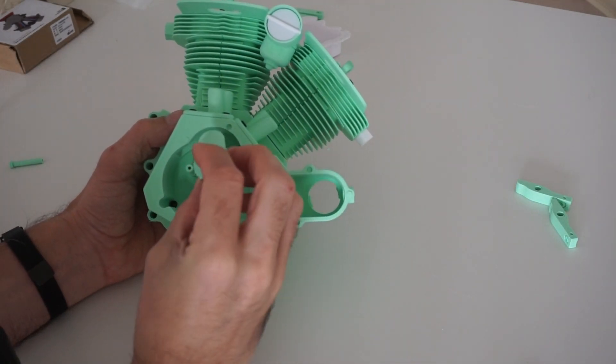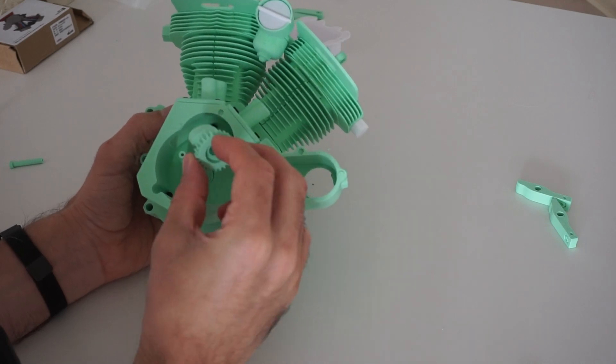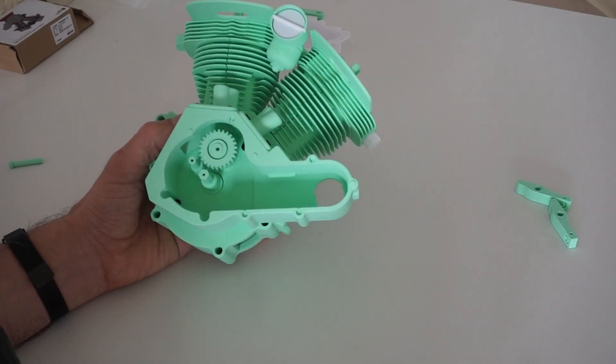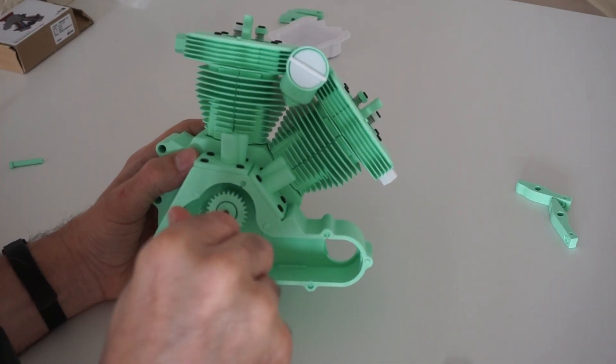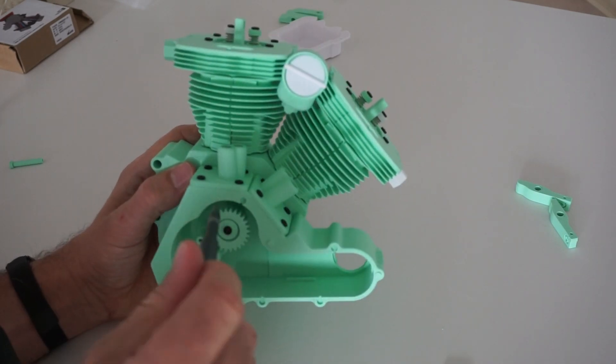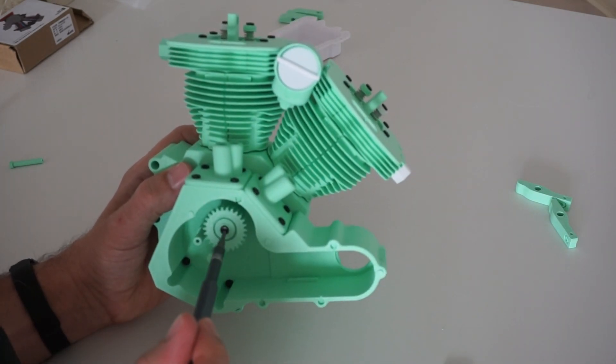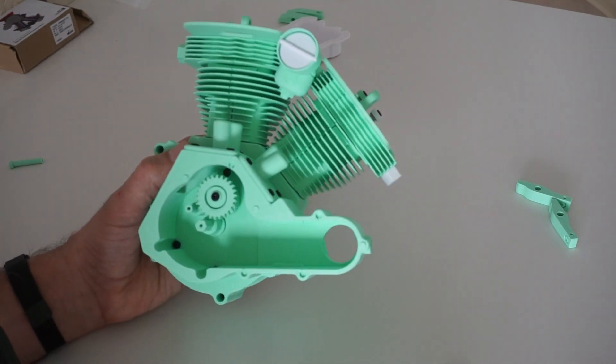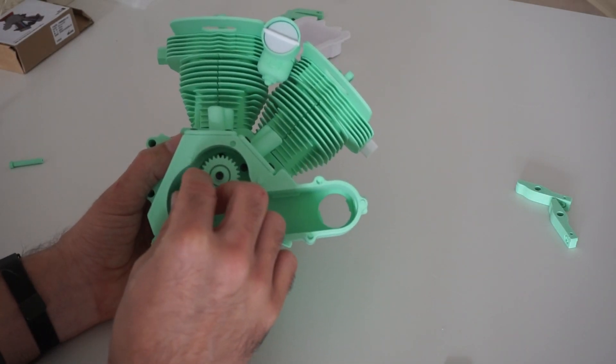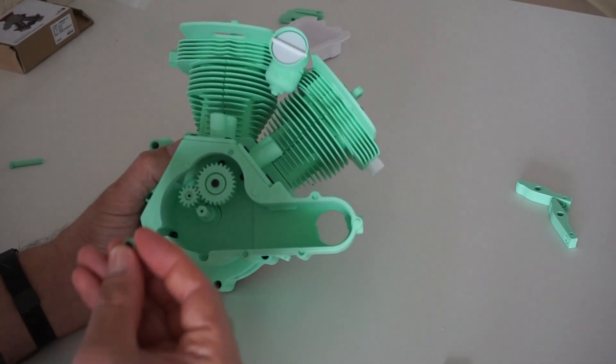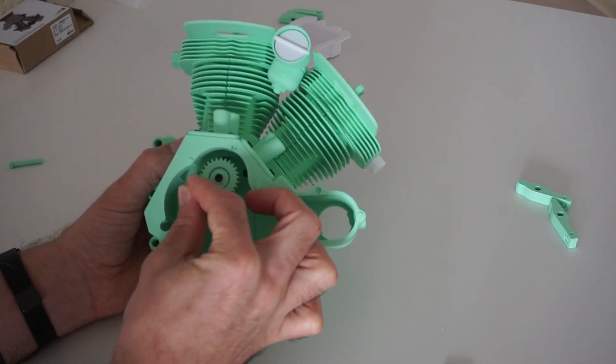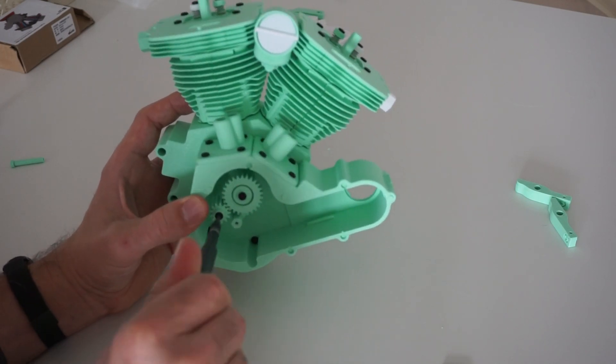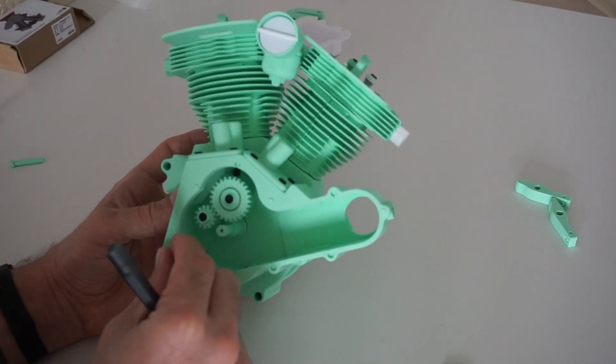Next up we're going to take the camshaft here, we're going to assemble that on here and there's a small plastic retainer and a screw to hold that in place. Don't want that too tight. Now this cannot spin, I'm going to back that off just a little bit. There we go.